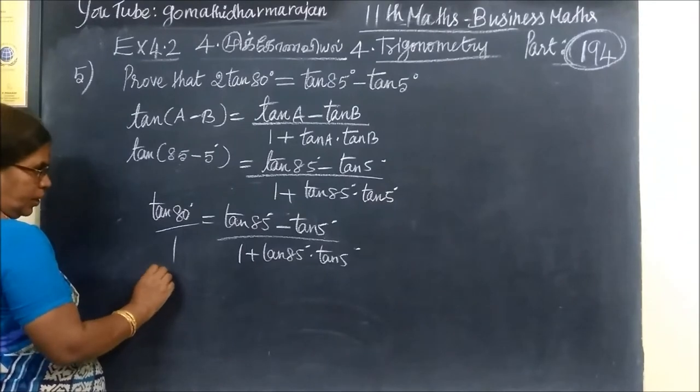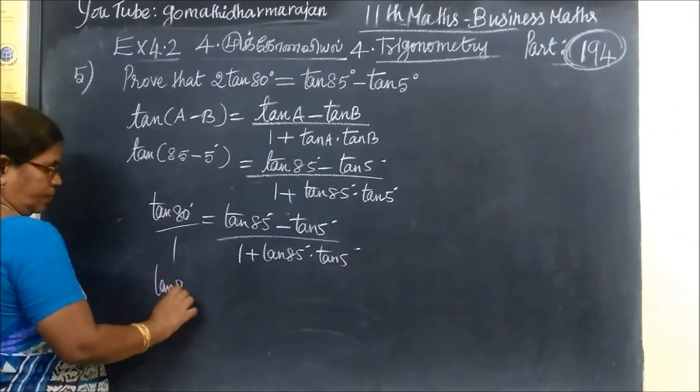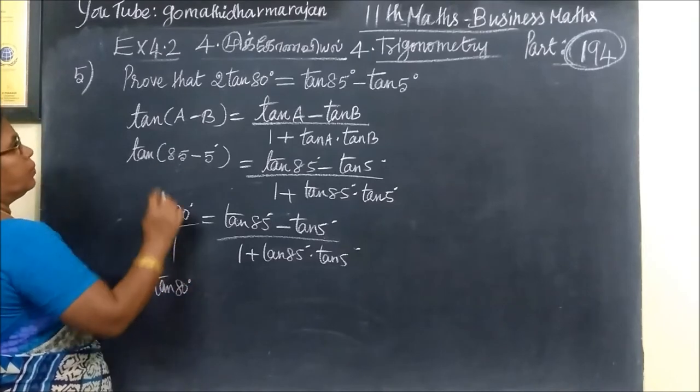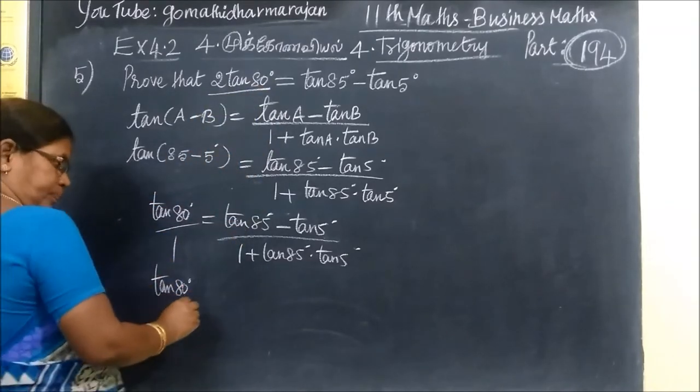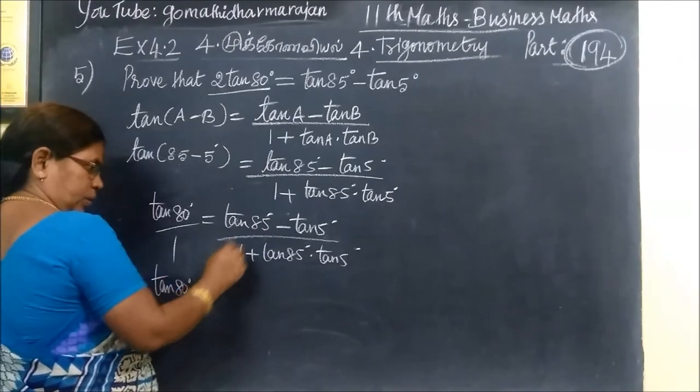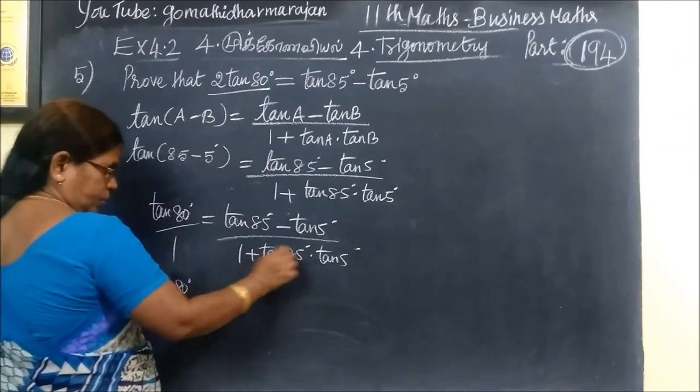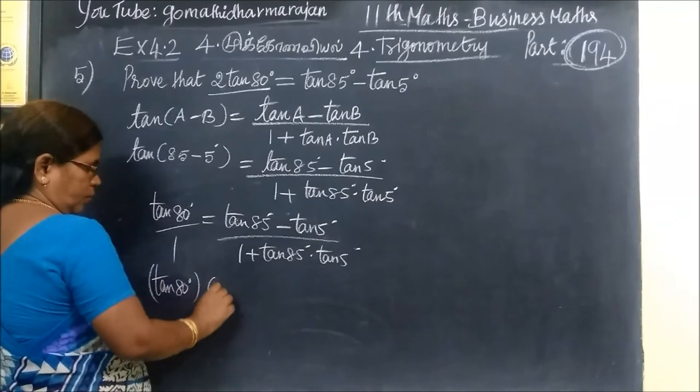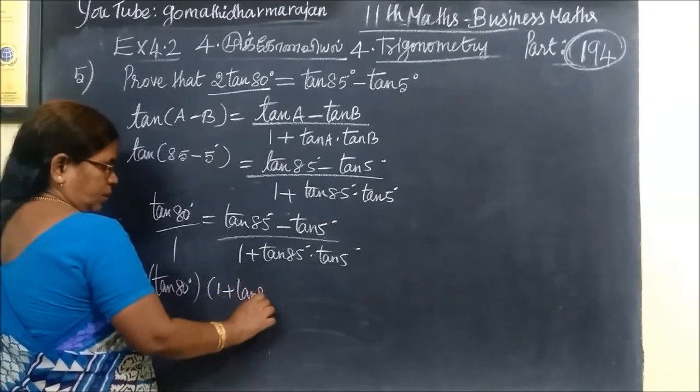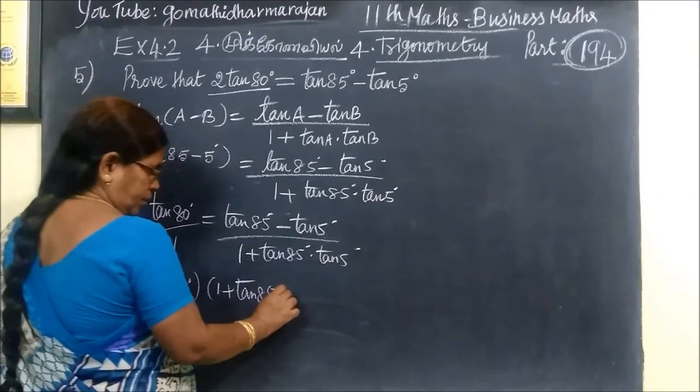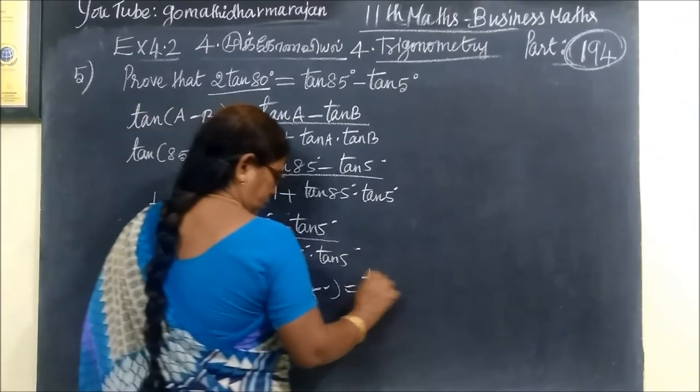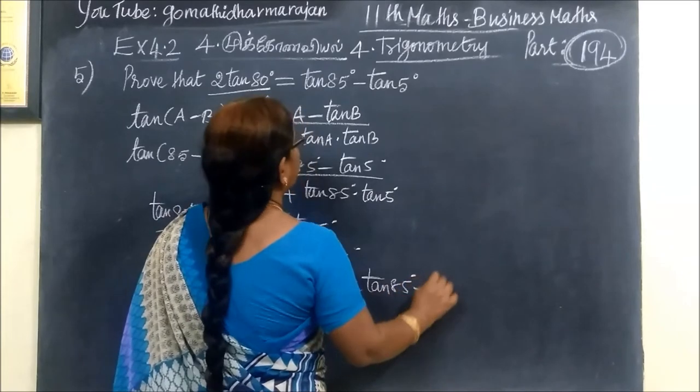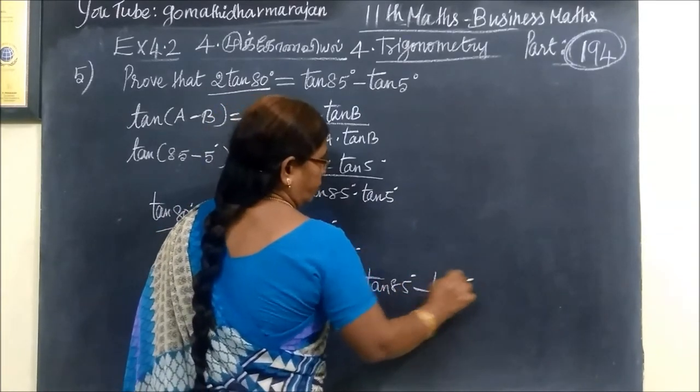What do you get? Tan 80, when I write it down clearly. What do you get? 1 plus tan 85 times tan 5 equals tan 85 minus tan 5.